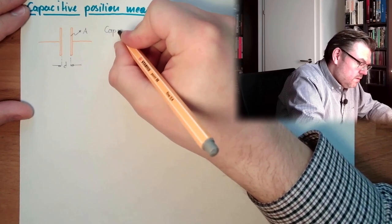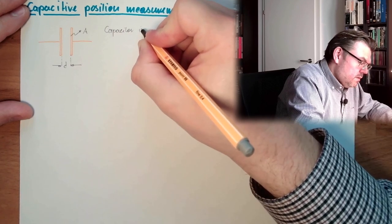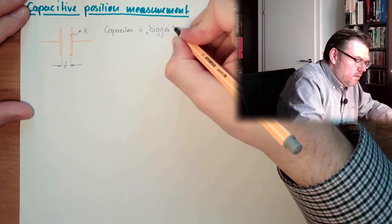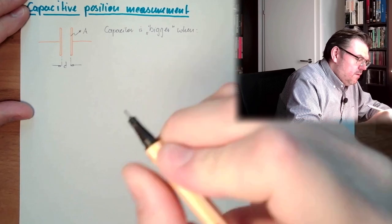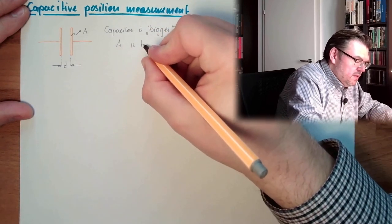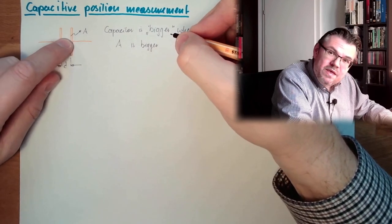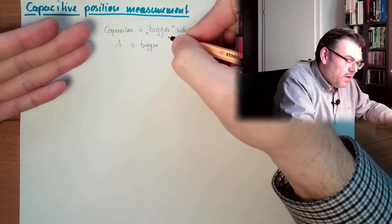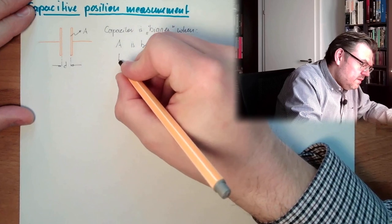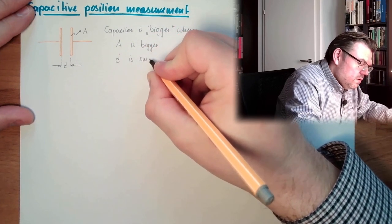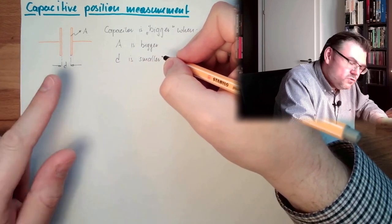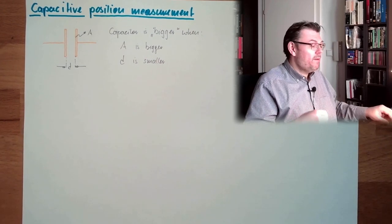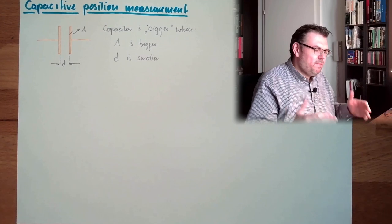The capacitance is bigger when the area A is bigger. The bigger the area is, the more charge can be stored by this capacitor. And the capacitance is bigger when D is smaller — the tinier the gap between those two plates is, the bigger the capacitor is.